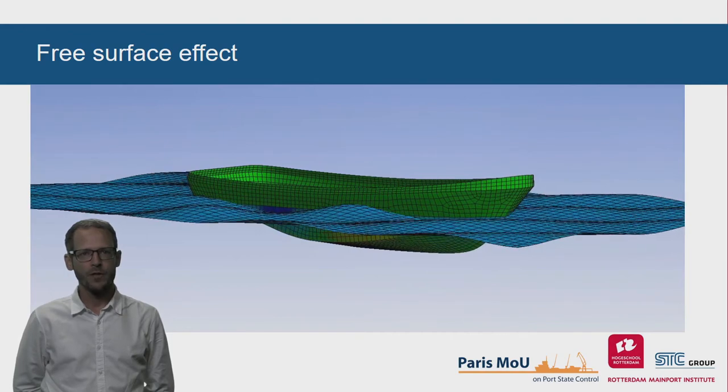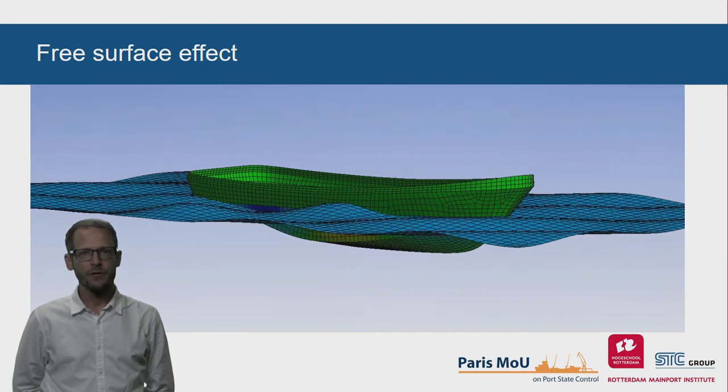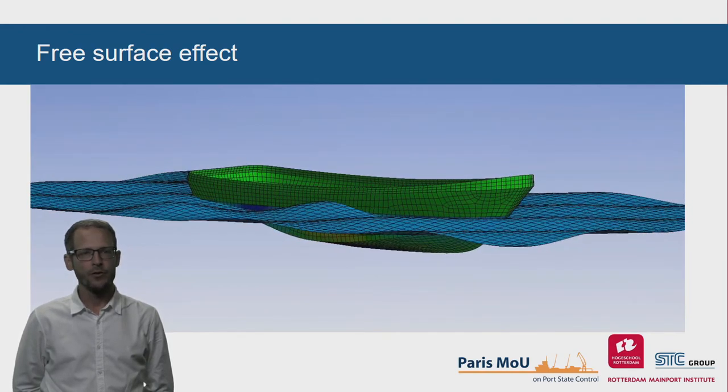The reduction of initial stability due to the effect of shifting fluids is called the Free Surface Effect.